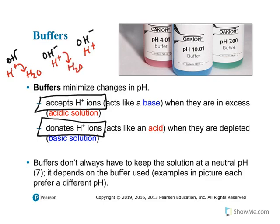I also want to show you that buffers don't have to maintain a neutral pH - it depends on the buffer. Here I have an acidic buffer that maintains a pH of about 4.01, here's a buffer that maintains 10.01 (an alkaline buffer pH range), and here's a neutral buffer that maintains pH 7. It just depends on the buffer you're using and what pH it likes to maintain. So buffers can act as both an acid and a base.